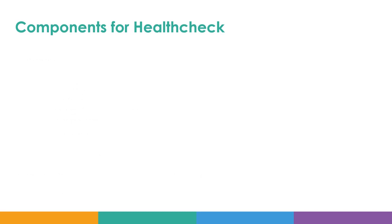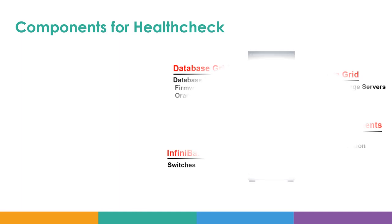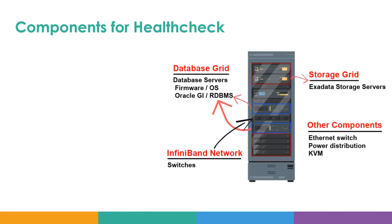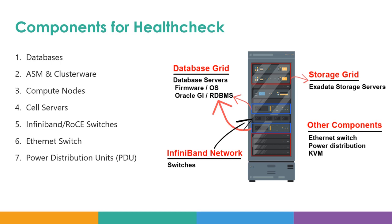Now let's look at the various components where you need to perform the Exadata health check. As you are aware, Exadata is a stack of multiple components: a database server which is a compute instance, a storage server, an InfiniBand network, and other components like ethernet switches, PDUs, etc. Issues can arise at multiple layers — database, ASM, cluster server, compute instance, cell servers, InfiniBand or RoCE switches (the new switch type in Exadata X8M), ethernet switch, and the power distribution unit (PDU).